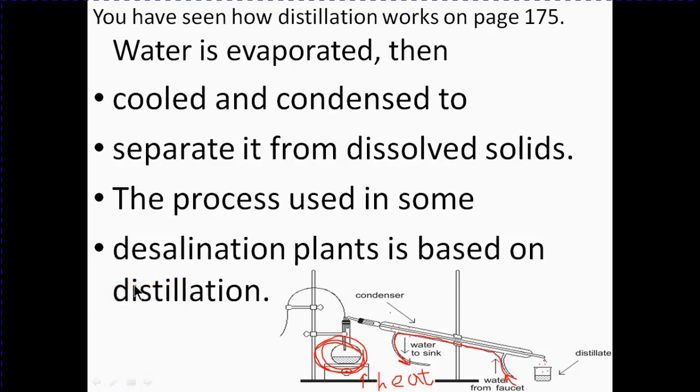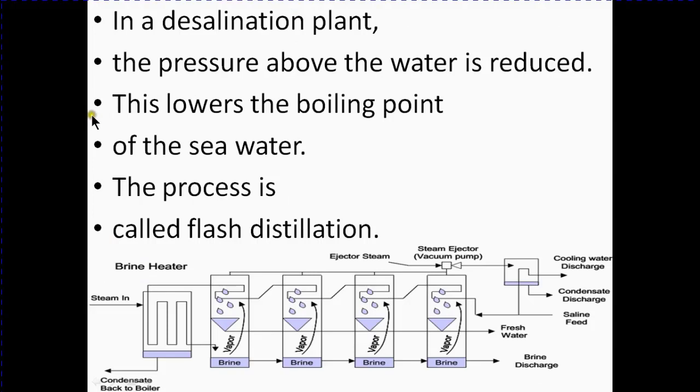Now next, in a desalination plant, pressure above the water is reduced. This lowers the boiling point of the sea water. The process is called flash distillation. So what is this? Let's see about the flash distillation.